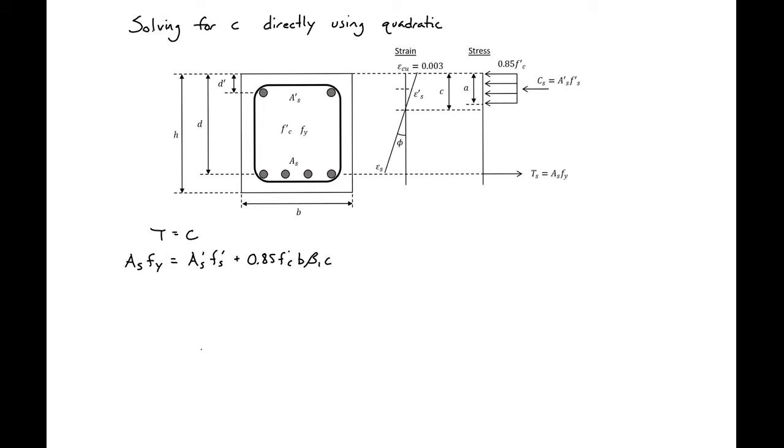We can use our strain diagram and Hooke's law, as we've done before, to find an expression for our stress in our compression steel with regard to C. So we'll find our F prime S is equal to 0.003 times Es times C minus D prime over C.